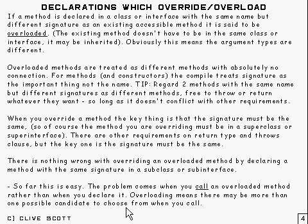Overriding is something which is sorted out at run time. And that's where the difference is. So you get overloading sorted out first to work out which method is to call, and if that method happens to be overridden, then that will be sorted out at run time.